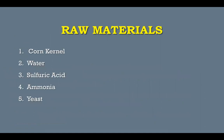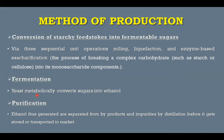In this method, we use corn kernel, water, surfactant/enzyme, ammonia and yeast as raw materials. This method is followed by three steps: first is conversion of starchy feedstock into fermentable sugar; second is fermentation; and last is purification or distillation of the material in the purification process.